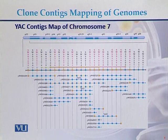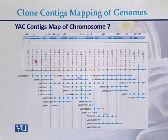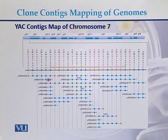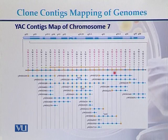This is the diagram of a YAC contig map of chromosome 7. Here we can see the YACs which are present at this location of chromosome 7 of the human. YAC number one, second, third, and fourth — all these YACs have been arranged in a single map which is called a contig map, or YAC contig map. These YACs have been arranged in a linear sequence, and that map or linear sequence is called the YAC contig map.